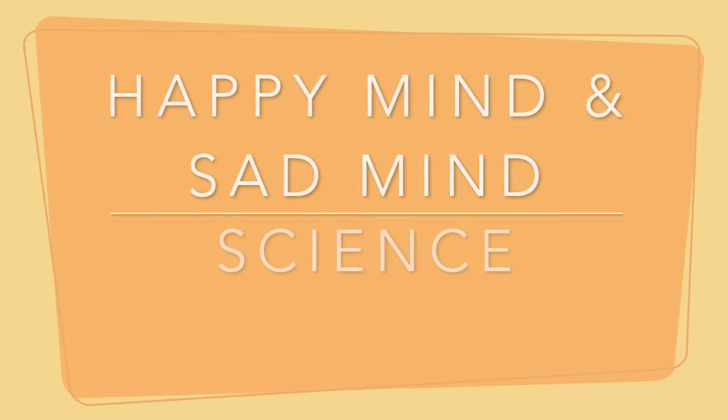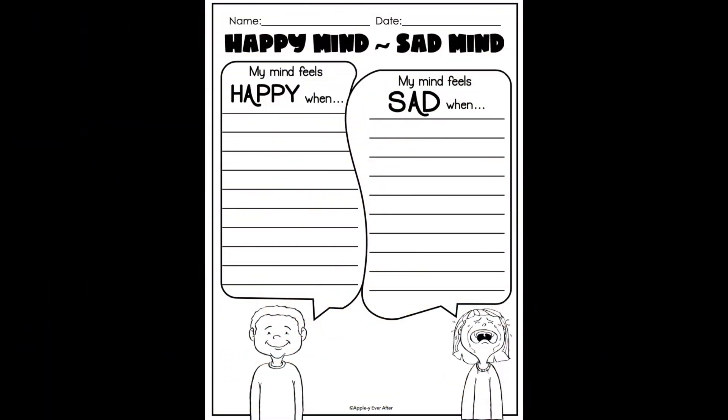Hey everyone, welcome to Science. Today we're going to be talking about a happy mind and a sad mind. So this is the first worksheet we have here. It's really important to understand that happy and sad are both emotions that we feel, and we can actually feel both of those emotions somewhat together.